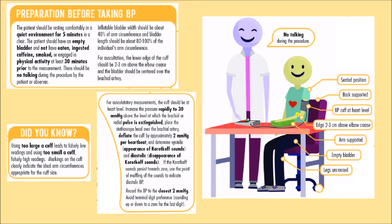The subject should be in a seated position with back supported. The BP cuff should be placed two to three centimeters above the elbow crease — that is, above the cubital fossa. The arm should be supported. The subject should empty their bladder — void urine — before blood pressure is measured. Legs should be uncrossed.